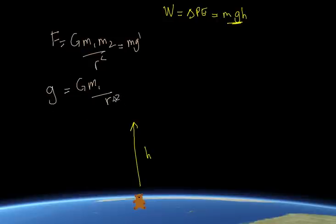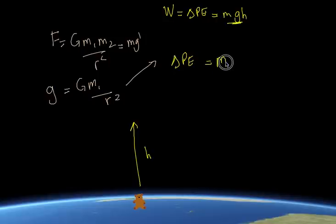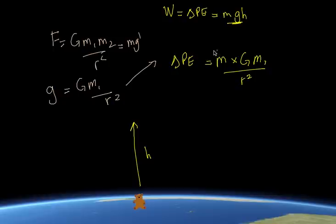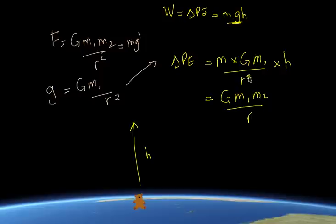As a result, we need to substitute that in. The work done — the change in gravitational potential energy — equals the mass of Teddy multiplied by the g value as it changes, which is Gm₁/r², multiplied by the height h. Cleaning that up, the change in gravitational potential energy equals Gm₁m₂/r, since the distance terms — r² in the denominator and h — cancel to give one power of r.